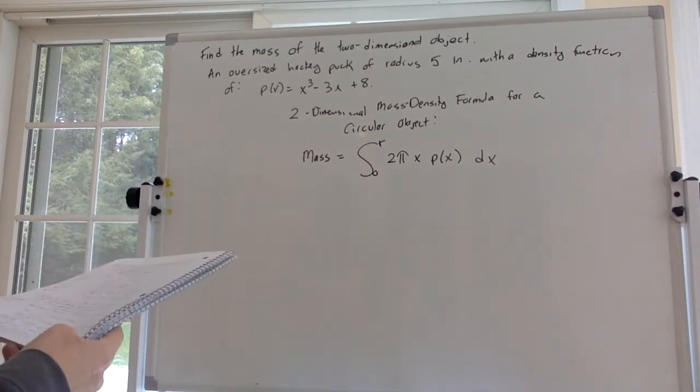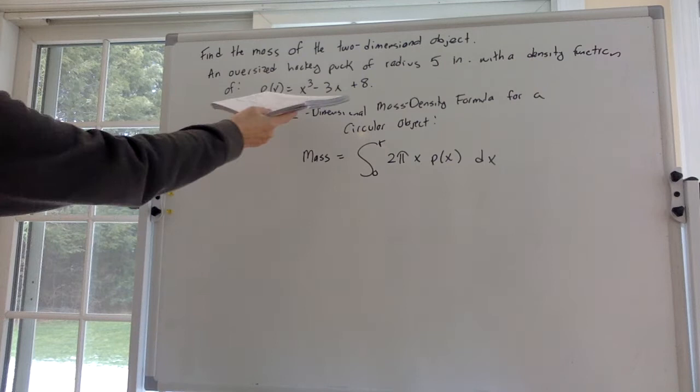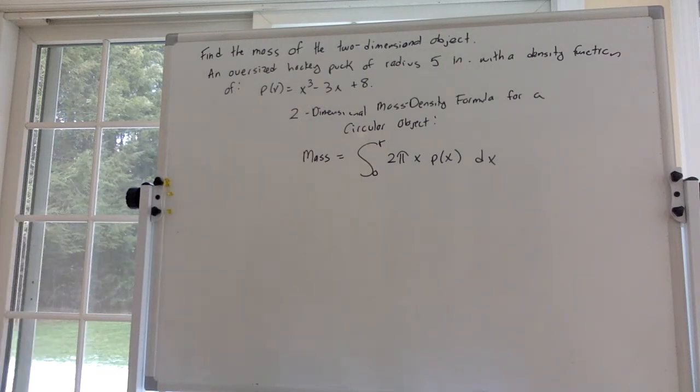Hi everybody. In this problem, they want us to find the mass of a two-dimensional object. We're talking about an oversized hockey puck of radius 5 inches with a density function p of x equals x cubed minus 3x plus 8.